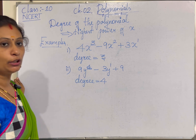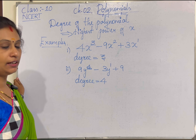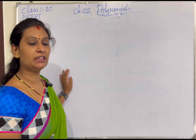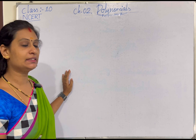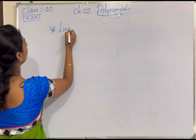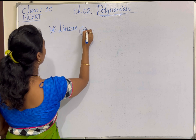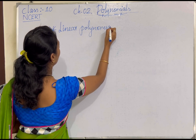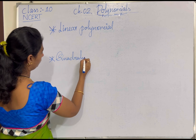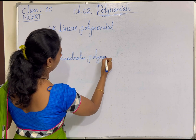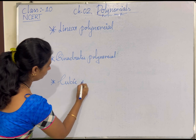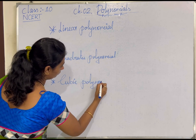Based on the degree of the polynomial, polynomial expressions are classified as linear, quadratic, and cubic. The classification is based on the highest power of the variable. We can classify them as linear polynomial, quadratic polynomial, and cubic polynomial.